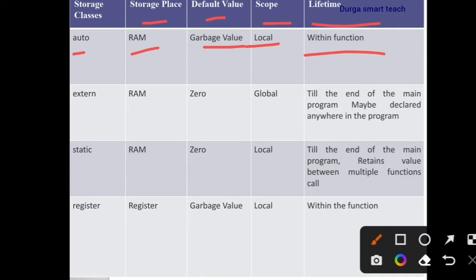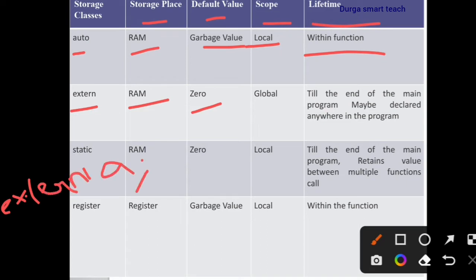The next type of storage class is external. The keyword 'extern' is used to declare this type of variable. The storage space is RAM, and the default value is 0. So when you declare 'extern int a', the initial value 0 is stored in that memory space.